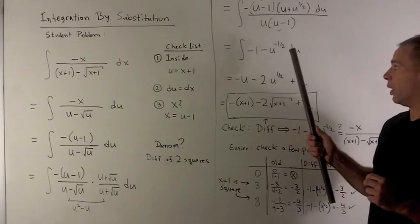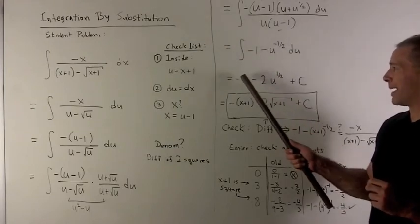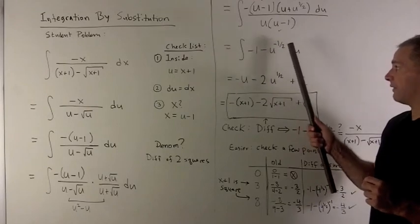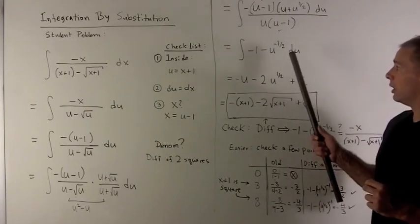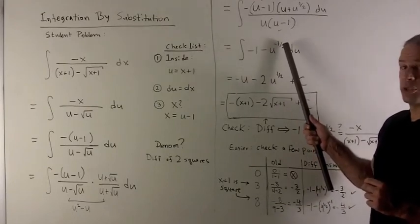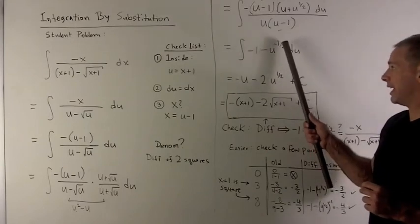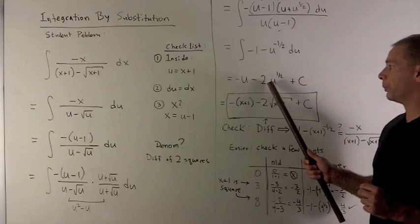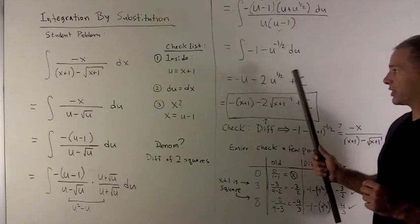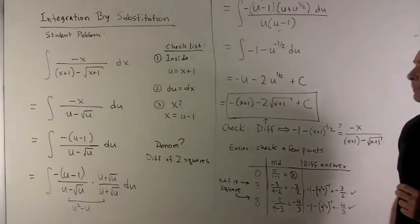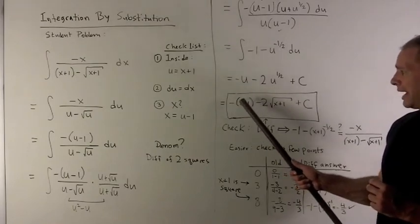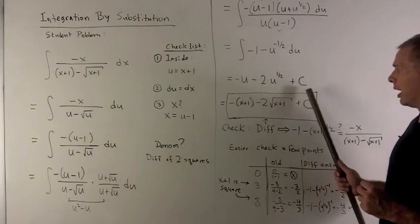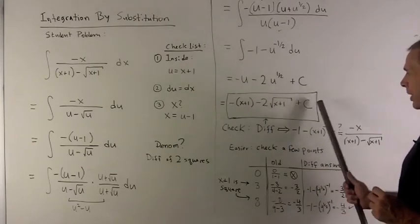This we can take the antiderivative of now. The integral of minus 1 with respect to u is just minus u. For the integral of u to the minus one-half with respect to u, the rule is we add 1 to the exponent, making it one-half, then flip it over to get a coefficient of 2. Getting rid of the u's by substituting x plus 1 back in, I get minus x plus 1 minus 2 square root of x plus 1, plus my constant.